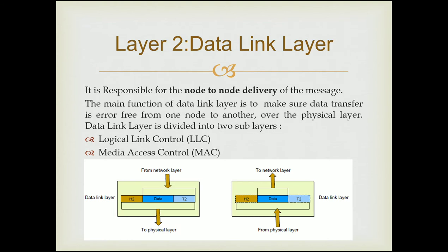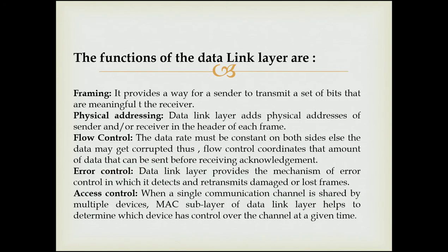The second layer is the Data Link layer. The Data Link layer transforms the physical layer — a raw transmission facility — into a reliable link. It makes the physical link appear error-free to the upper layer, i.e., the Network layer. The functions of the Data Link layer are: framing, physical addressing, flow control, error control, and access control.